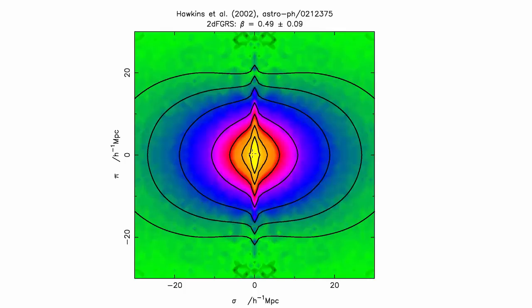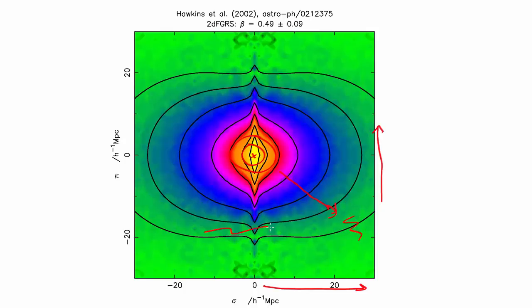The center here marks an average galaxy in the survey, and we've worked out for every galaxy where other ones nearby are going to be. This dimension shows the shift in angle, and this dimension shows the shift in redshift. The bottom line is it's very high in the middle, telling us that the most likely place to find a neighboring galaxy is close to the first one. As you go further away, that goes less and less — you're less and less likely to find another galaxy at bigger distances. This is simply because galaxies are clustered — they like living near other galaxies. But that's not all it's showing you.